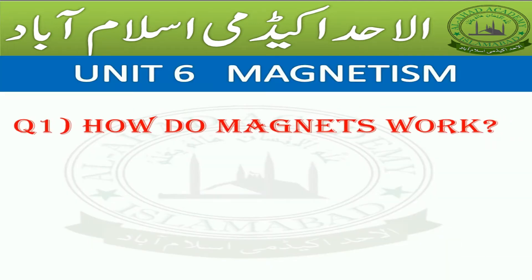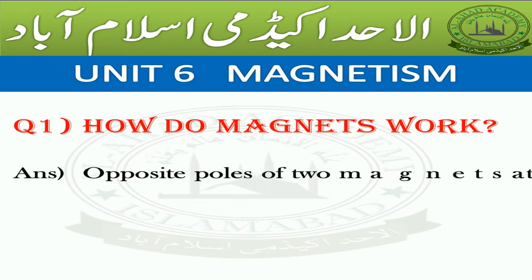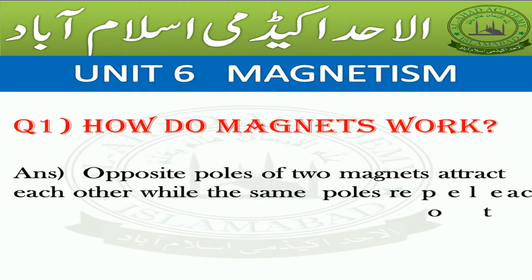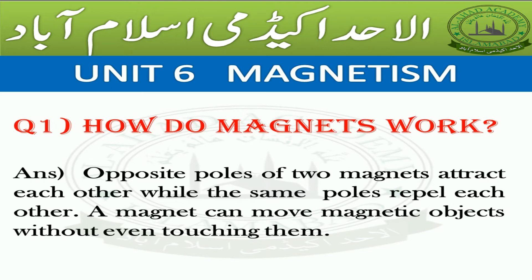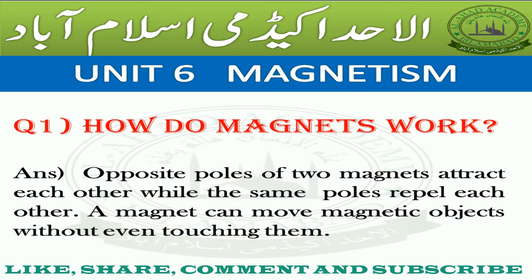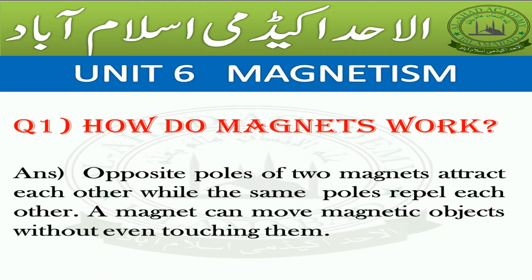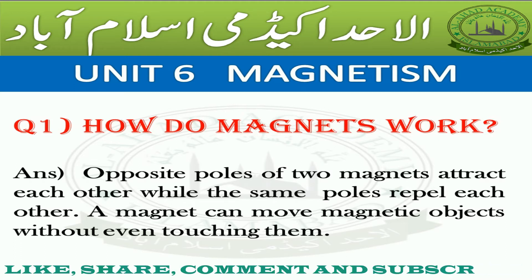Question Number 1: How do magnets work? Answer: Opposite poles of two magnets attract each other, while the same poles repel each other. A magnet can move magnetic objects without even touching them.